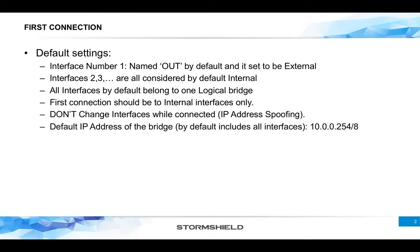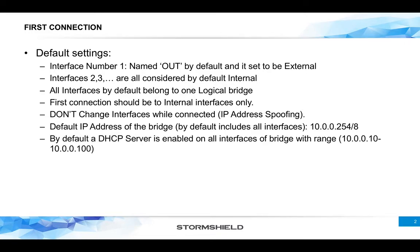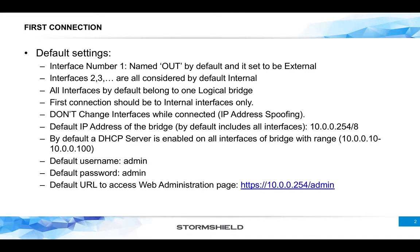The default IP address of the bridge is 10.0.0.254/8, which applies to all interfaces since they are all part of the bridge. By default, a DHCP server is enabled on all interfaces, distributing an IP range from 10.0.0.10 up to 10.0.0.100. The default username and password is admin/admin, and the URL for the web administration page is https://10.0.0.254/admin. The first time you connect, you will be redirected to the installation wizard.